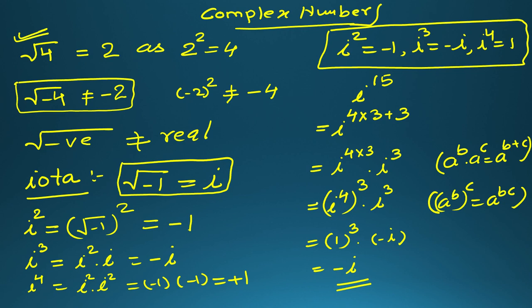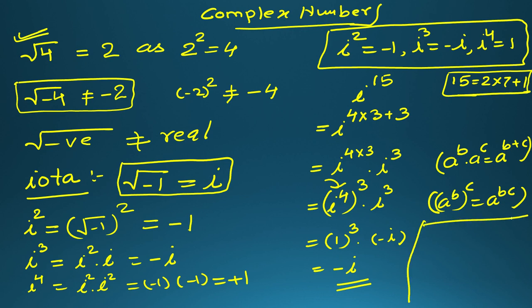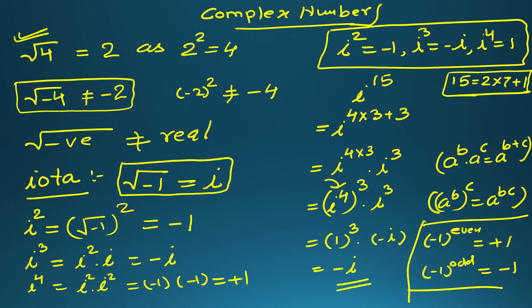Some of you may say we can use i squared also — writing 15 as 2 times 7 plus 1. Yes, you can. But in that case you need to know that minus 1 to the power of an even number is plus 1, and minus 1 to the power of an odd number is minus 1. To avoid that confusion, I prefer to use power 4, because i to the power 4 is 1, and 1 to the power of any number is always 1.